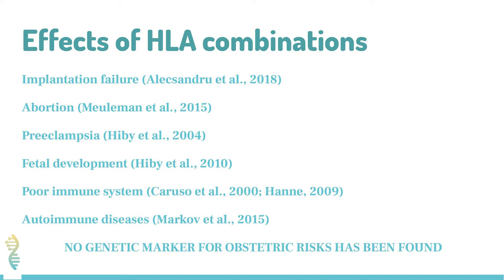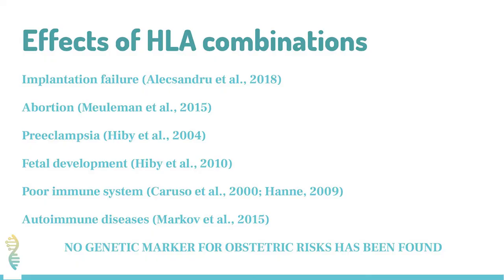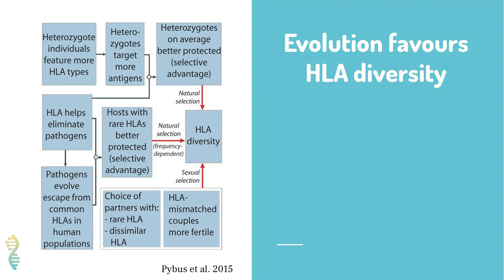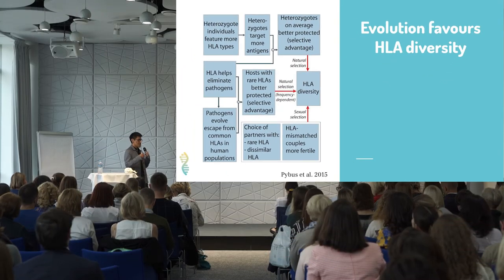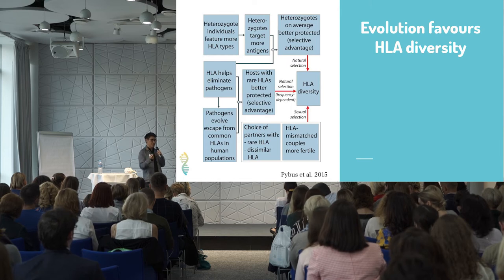However, there is no single genetic marker that allows us to predict if an HLA combination is going to be a problem or not. From the evolutionary point of view, HLA variety is under selection because we need diversity to defend from pathogens on the one hand, and on the other hand we need to keep a certain compatibility between individuals so that the fetus can implant in the uterus.